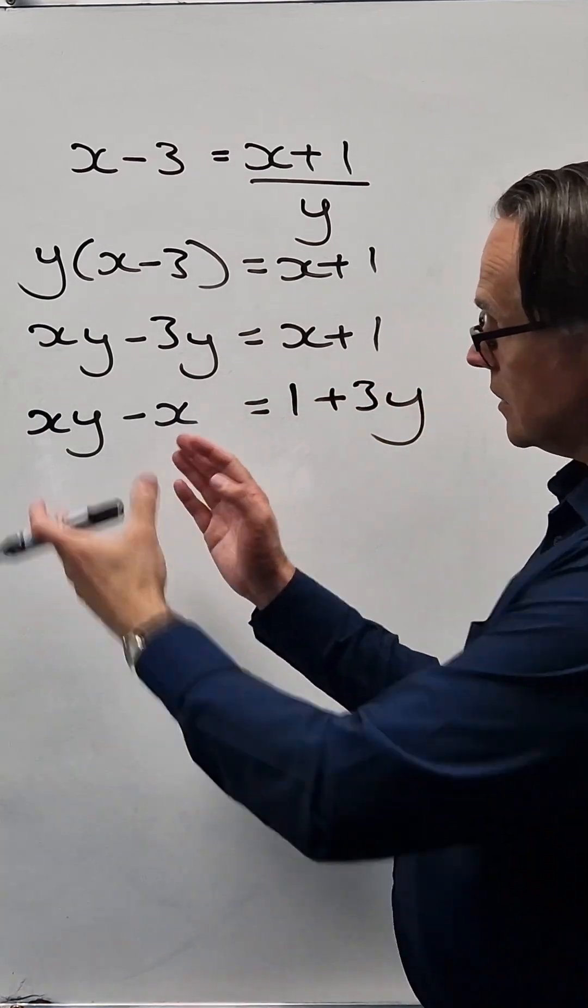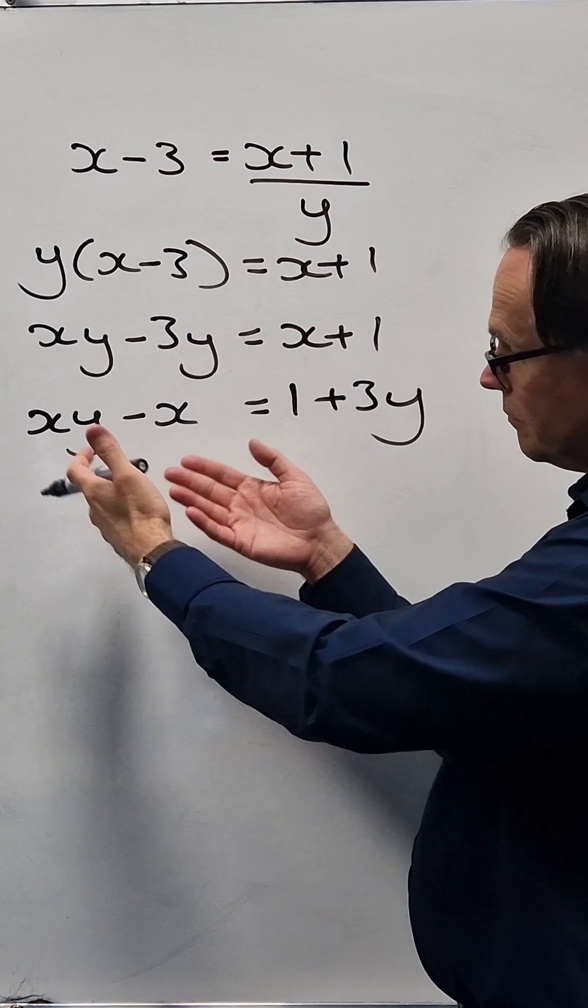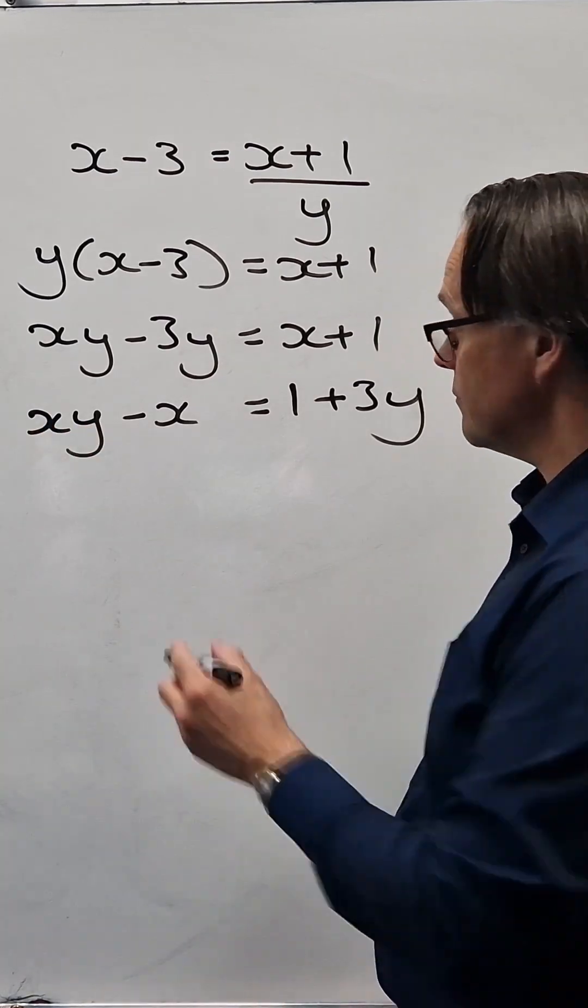And now what we do to make the X go from being there twice to just being there once, we factorise.